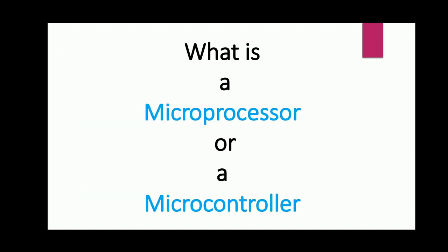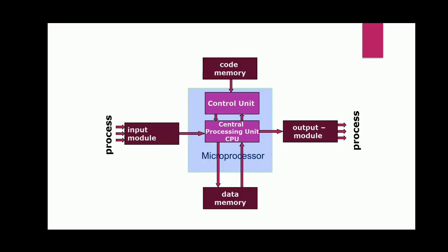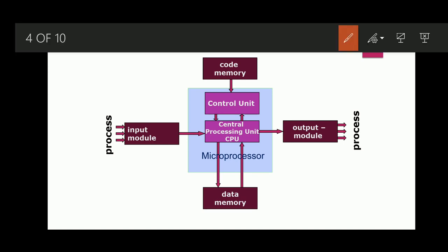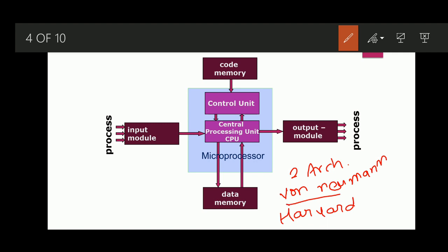The first thing we will talk about is what is the microprocessor and what is the microcontroller. The microprocessor is the central device for all computer systems. It consists of two architectures: von Neumann architecture and Harvard architecture. In von Neumann architecture, memory space is shared between code and data, as well as the memory buses. Whereas in Harvard architecture, there are two independent memory spaces for code and data, as well as two memory bus systems for code and data.